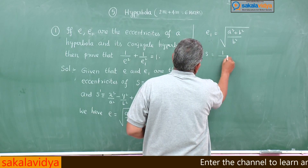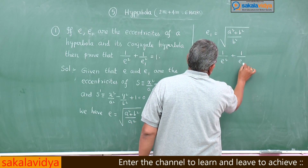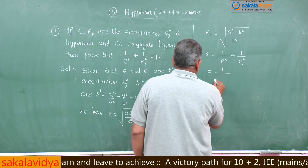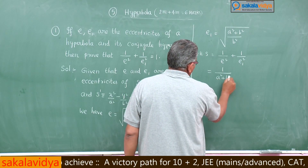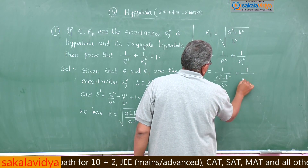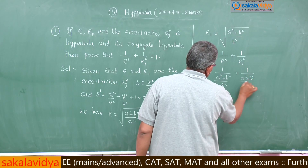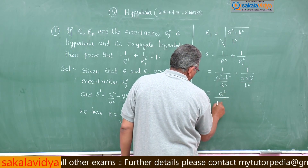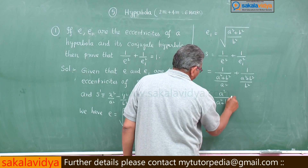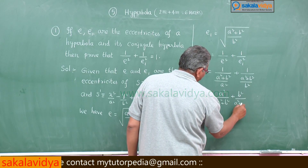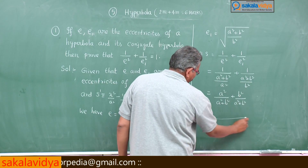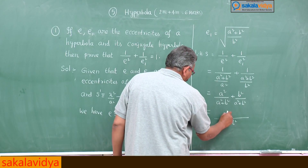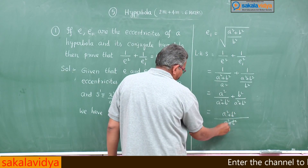The left-hand side is 1/E² + 1/E₁². So, 1/E² = a²/(a² + b²) and 1/E₁² = b²/(a² + b²), taking the reciprocals. This can be written as a²/(a² + b²) + b²/(a² + b²). Now, (a² + b²) is the LCM, so we get (a² + b²) in the numerator and denominator.